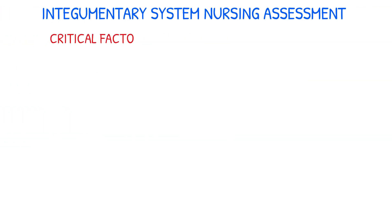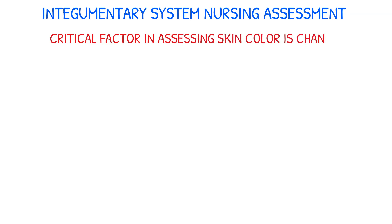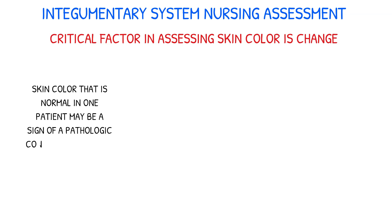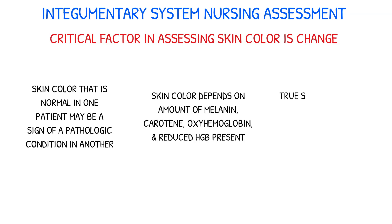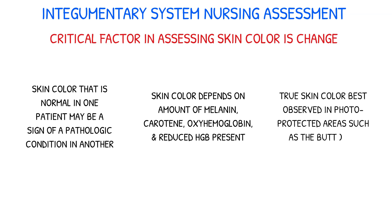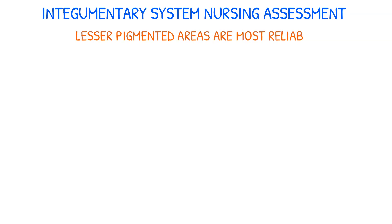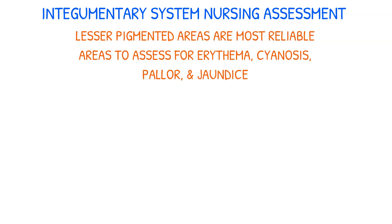The critical factor in assessing skin color is change. A skin color that's normal for one patient can be a sign of a pathologic condition in another. Skin color depends on the amount of melanin, carotene, oxyhemoglobin, and reduced hemoglobin present at a particular time. True skin color is best observed in photo-protected areas such as the buttocks. Lesser pigmented areas are the most reliable areas to assess for erythema, cyanosis, pallor, and jaundice.